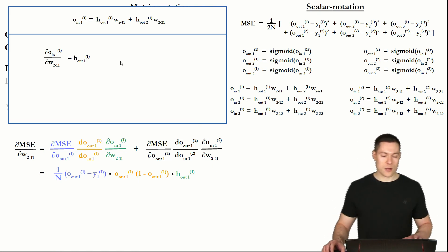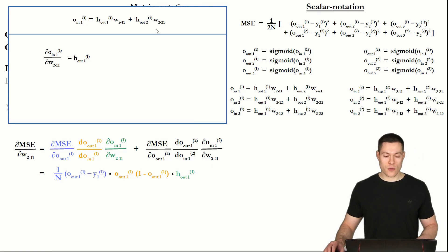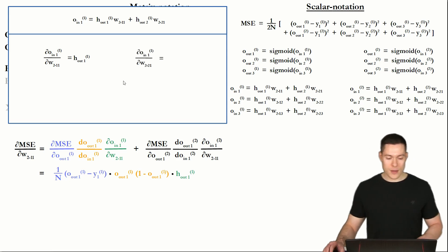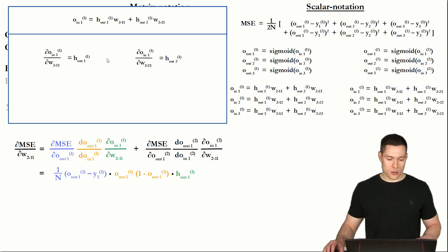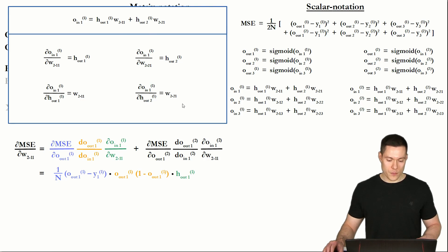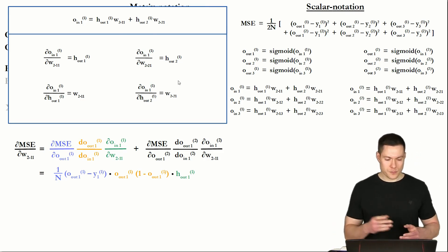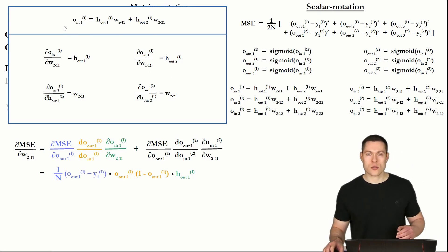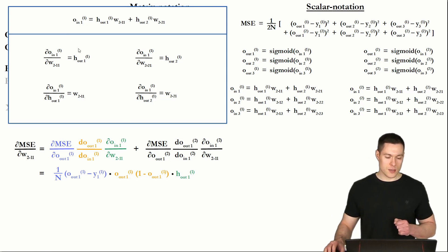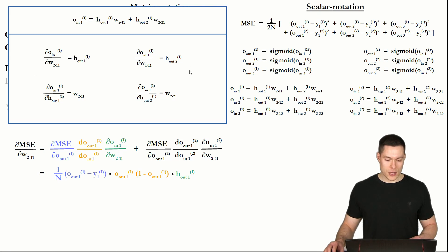Before we write down what those expressions actually look like, I want to make you aware of a certain pattern with respect to the derivative of the dot product. Namely, the partial derivative of O_in with respect to weight 2,1 is simply H_out 2. And the partial derivatives of O_in with respect to the H_outs are simply weight 1,1 and weight 2,1. The pattern is that the partial derivative of the dot product is always the opposite corresponding element — if we differentiate with respect to a weight, we get H; if we differentiate with respect to H, we get W.